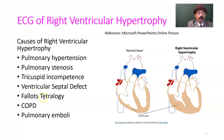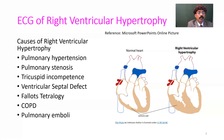Right ventricular hypertrophy is associated with Tetralogy of Fallot. COPD — chronic obstructive pulmonary disease — may lead to pulmonary hypertension and is also associated with right ventricular hypertrophy. Pulmonary emboli, even small repeated ones, may cause pulmonary hypertension and lead to right ventricular hypertrophy.